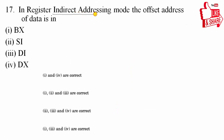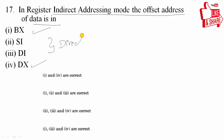Seventeenth question: in register indirect addressing mode, the offset address of data is in BX and DX registers. In direct addressing mode, source index and destination index pointers are used. In indirect addressing mode, BX and DX registers are used. Statements 1 and 4 are correct — option A follows.